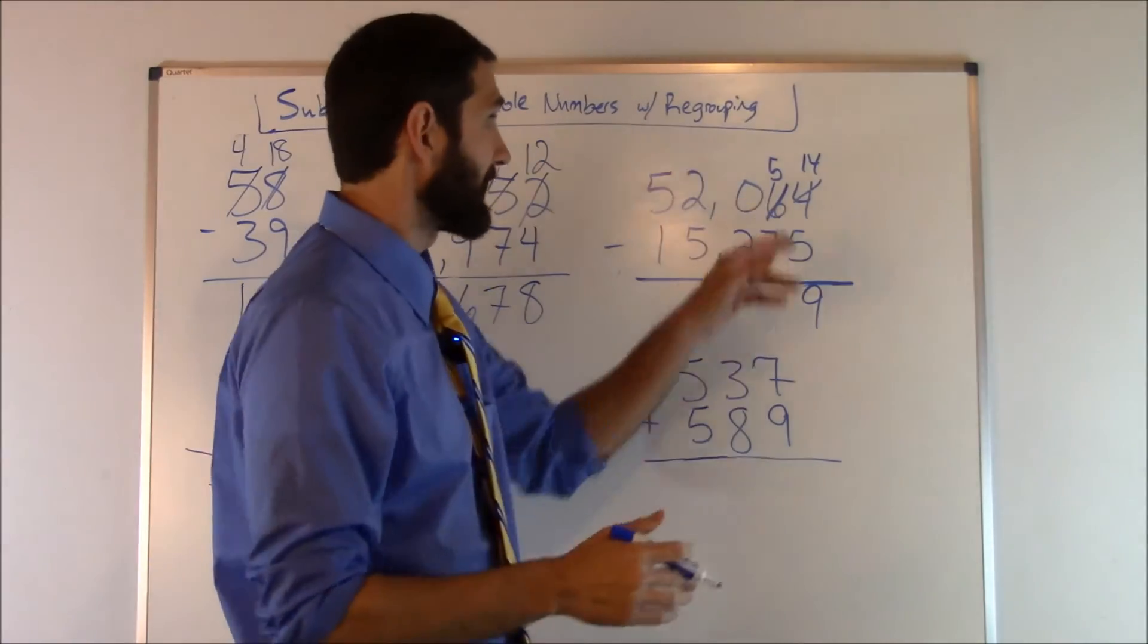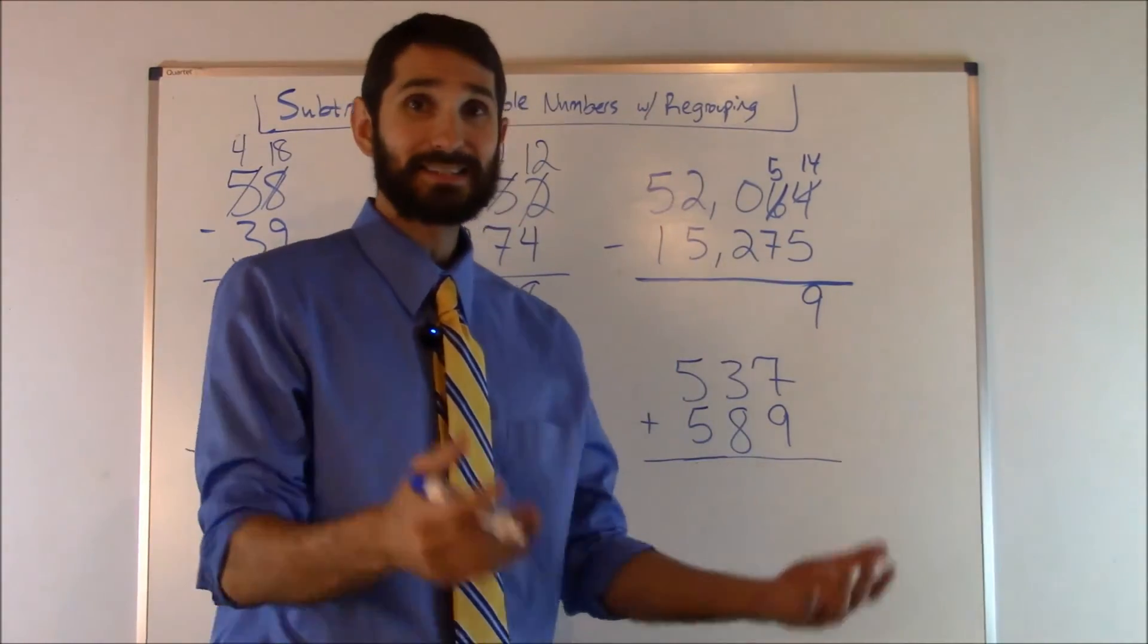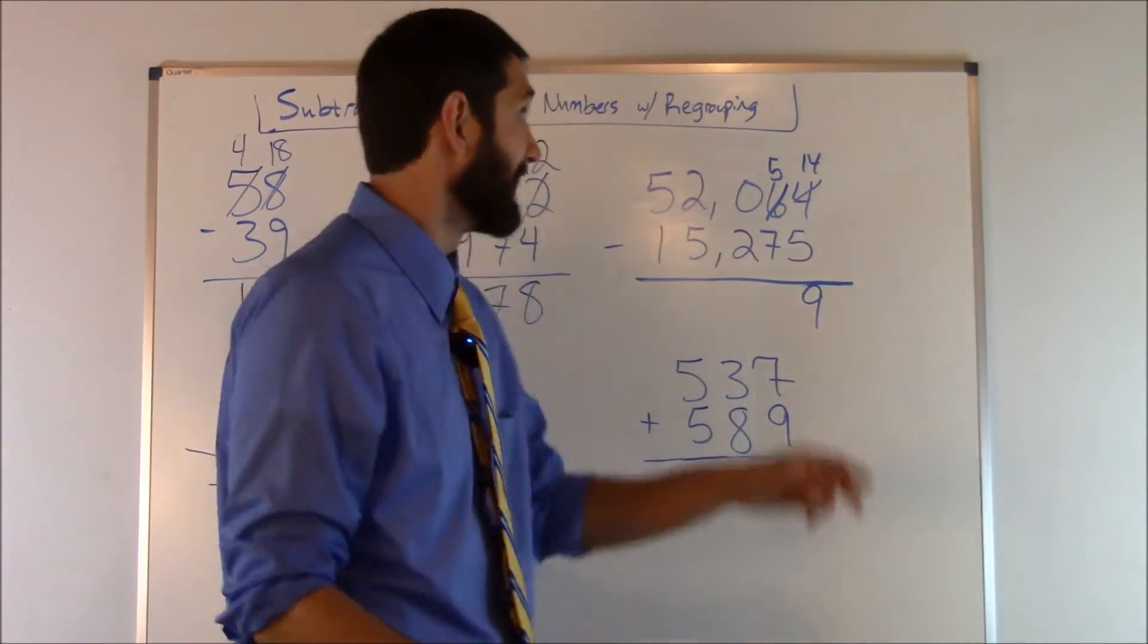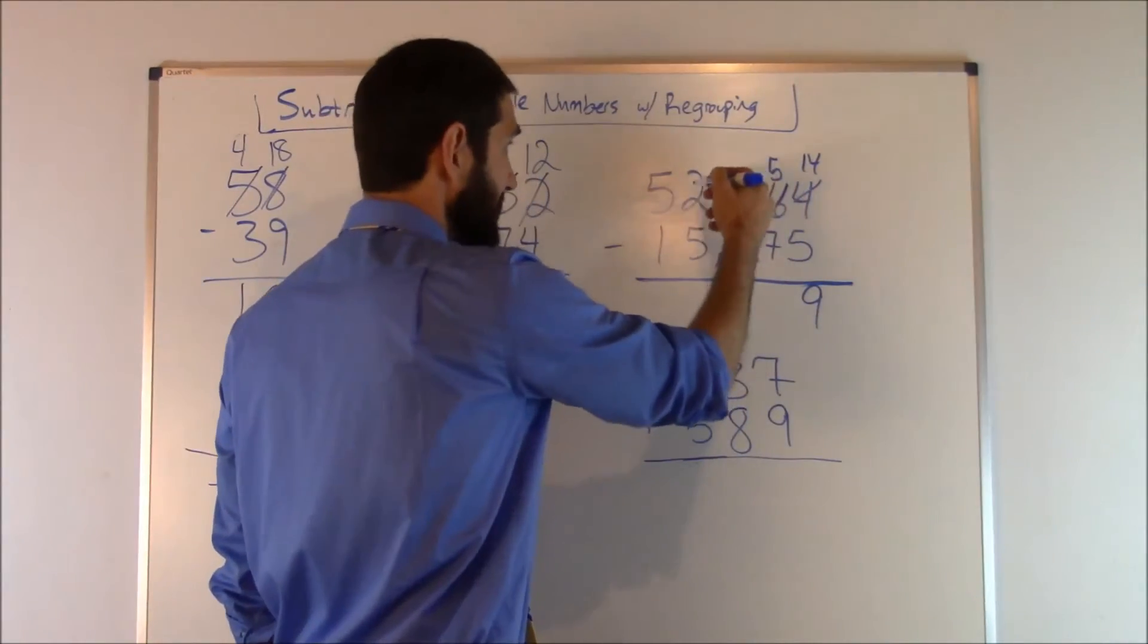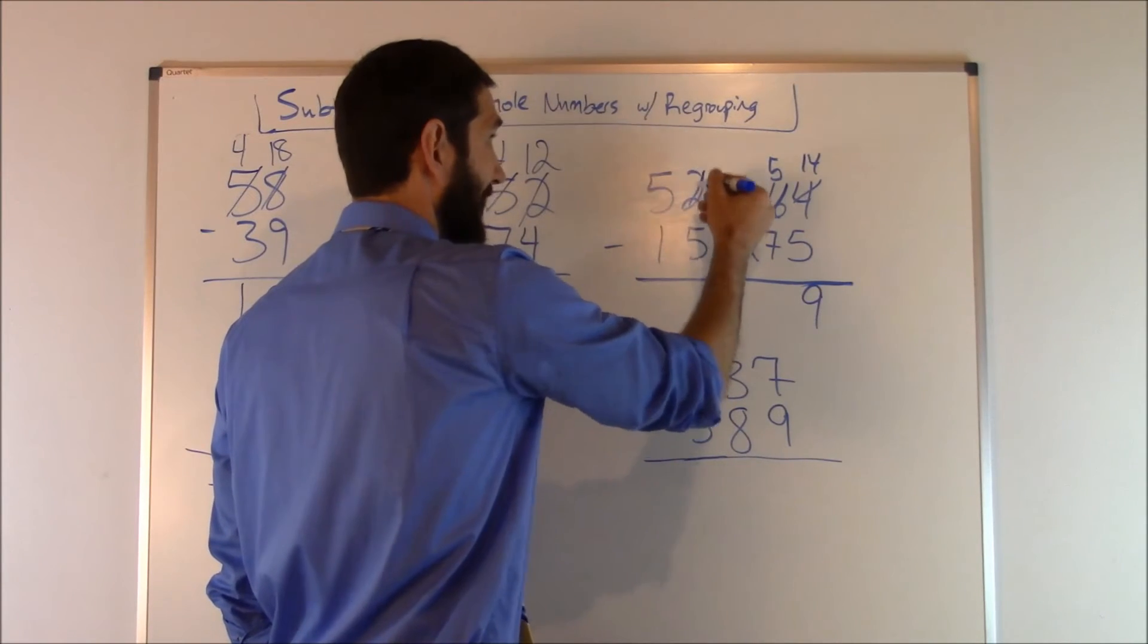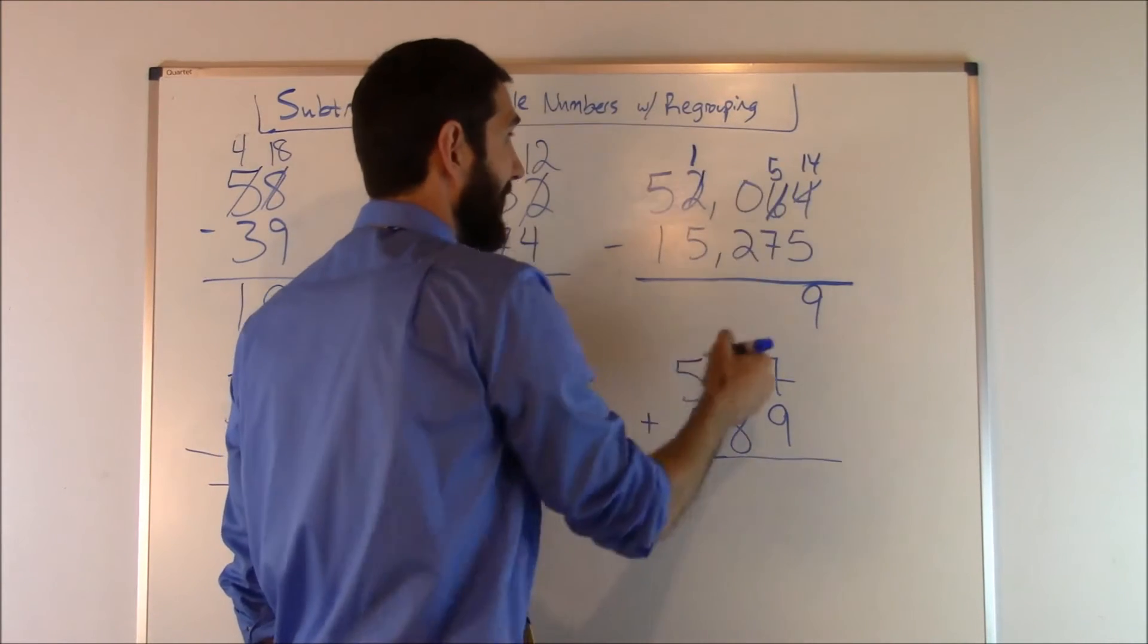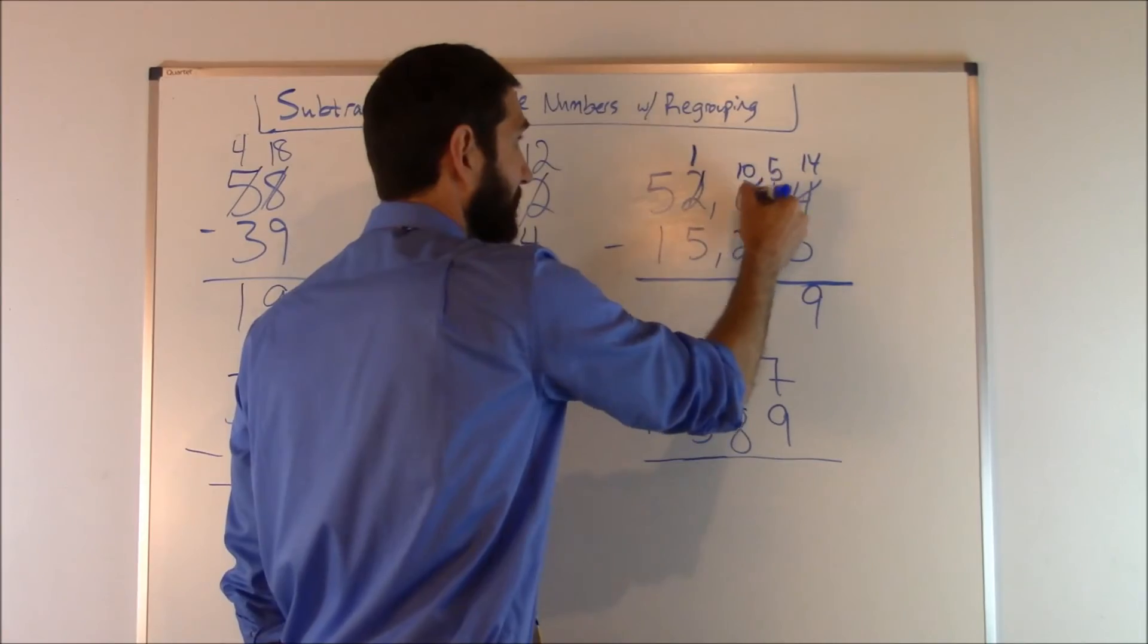So we go to the neighbor and we want to borrow one, but the neighbor has nothing to give. So what the neighbor has to do is this neighbor has to go to its neighbor and borrow one. So this neighbor goes here first and borrows one, which is going to make that a one. Then we add ten back here. That's going to make that a ten.